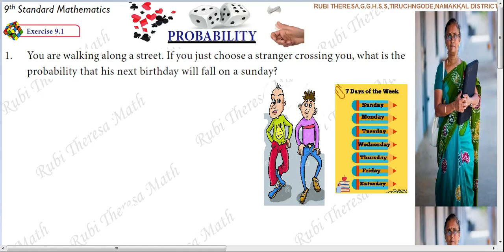The introduction video is separate. So first, let's see. You are walking along a street. If you just choose a stranger crossing you, what is the probability that his next birthday will fall on a Sunday?